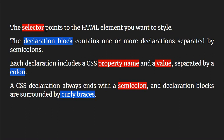The selector points to the HTML element you want to style. The declaration block contains one or more declarations separated by semicolons — this works like a key-value pair, and for every key-value pair you must put a semicolon. Each declaration includes a CSS property name and a value separated by a colon. CSS declarations always end with a semicolon, and the block is surrounded by curly braces.